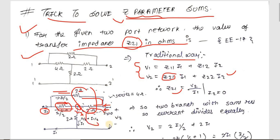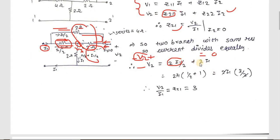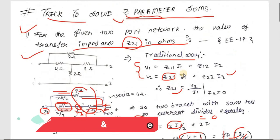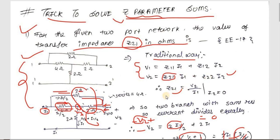Applying KVL in the output loop: −V2 + 2·(I1/2) + 2·I1 = 0. Solving: V2 = 2·(I1/2) + 2·I1 = I1 + 2·I1 = 3·I1. Therefore Z21 = V2/I1 = 3 ohms. As you can see, by the traditional way you spend a lot of time just to find one term of the Z-parameter.